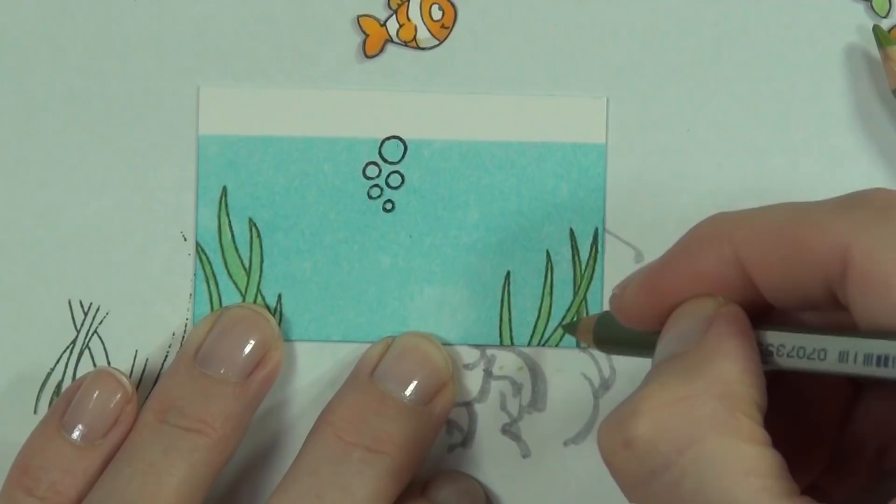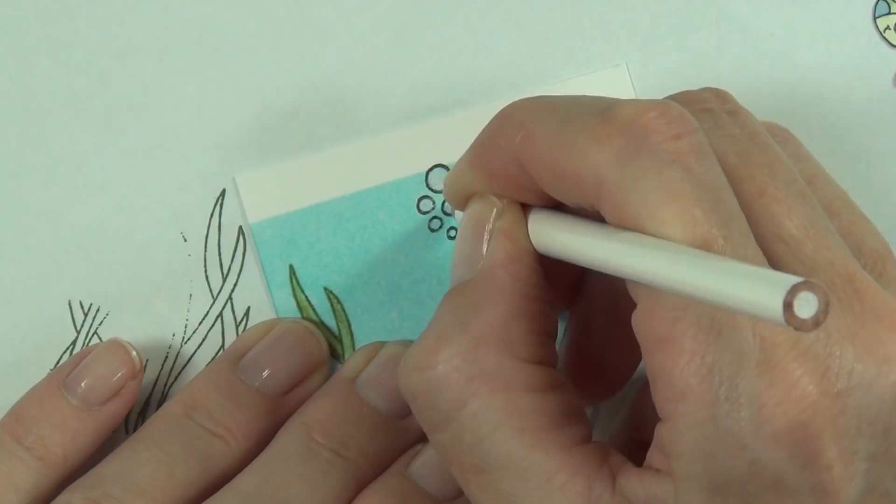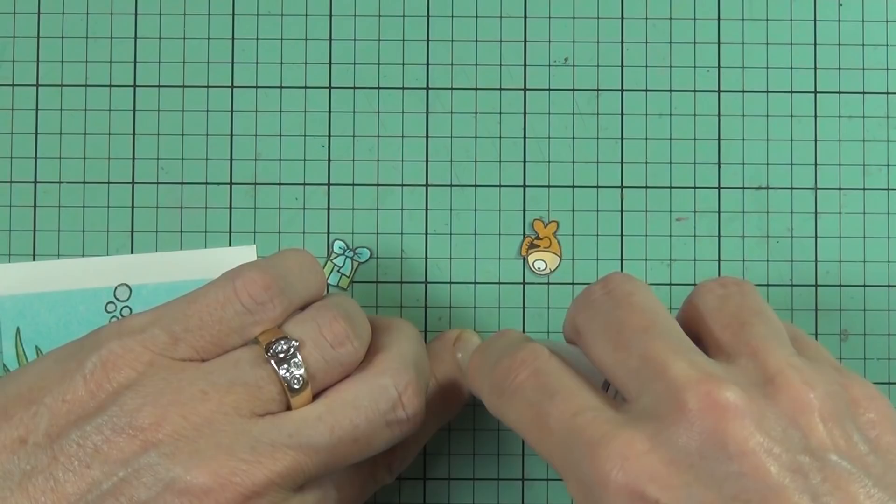So that's why I came in here with my Prismacolor pencils to add the coloring to the seaweed and of course to the bubbles. So now I'm going to actually adhere my little fish into place. I've just got some dotted adhesive.